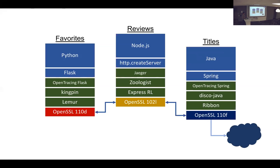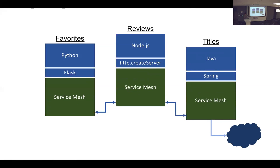Service mesh is a way of saying: we like all these things that are going on, but we'd like to push them down a layer into something common that we can just leverage everywhere without having to make all these choices and relearn them every time we switch from one service to another. You can put it into this common service mesh layer. It's not that it does something nobody else did before — it's just a common way to get at it.